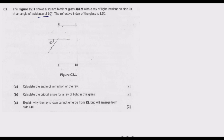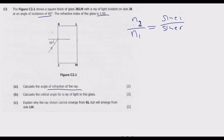The refractive index of the glass is 1.5. Question A: calculate the angle of refraction of the ray. We calculate the angle of refraction using Snell's law. The refractive index of two media is given by: the refractive index of medium 2 over medium 1 equals sine of angle of incidence over sine of angle of refraction. Since the ray is coming from air, the refractive index of air (medium 1) equals 1, so the refractive index of glass equals sine 60 degrees over sine of the angle of refraction.